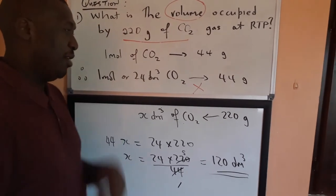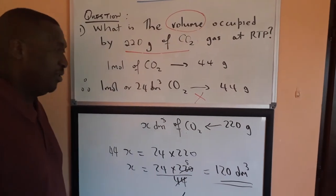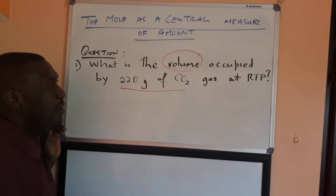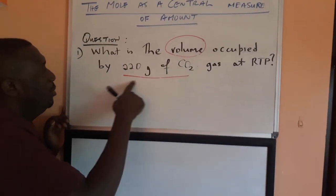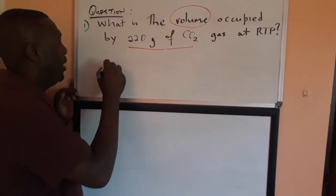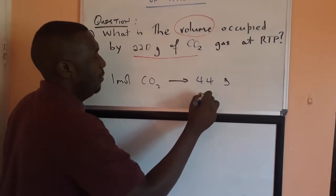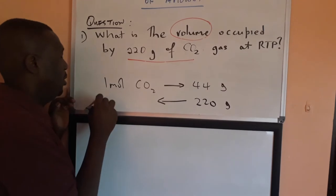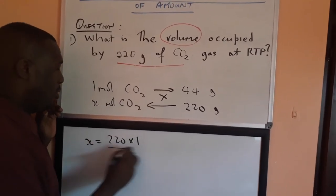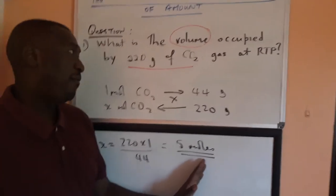Now I'll show you another way, step by step: first finding the number of moles, then finding the volume. You can do whichever method makes you comfortable. Let's do the same calculation in two steps. First, we determine the number of moles of CO2. One mole of CO2 has mass 44 grams, and we have 220 grams. So x = 220 × (1/44) = 5 moles of CO2.